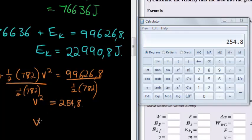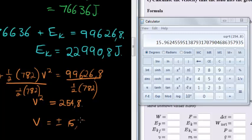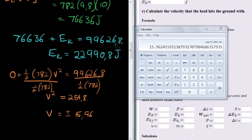But for velocity, equals plus minus because I'm taking the square root on both sides, 15.96 meters per second. Now,